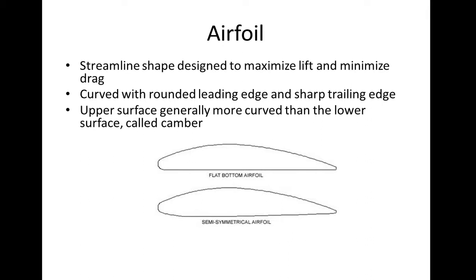Discussing aerodynamic principles — the first thing we need to talk about is an airfoil. An airfoil is a streamlined shape that helps to maximize lift and minimize drag. The basic idea of this shape is that the leading edge is rounded, on the left side of your screen, and the trailing edge on the right side is sharp. You'll also notice that the top of these airfoils is more curved than the lower surface, and this difference between the curvature of the top and bottom is called camber. Generally, the more camber, the more lift that is produced.